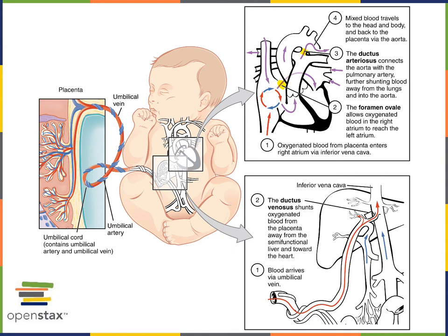Oxygen-rich blood drains in the umbilical vein from the placenta into the inferior vena cava. At the liver, there is a vascular shunt known as the ductus venosus that allows blood to flow directly from the umbilical vein into the inferior vena cava.